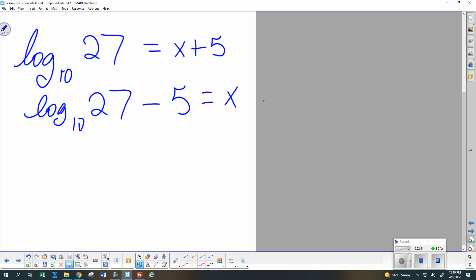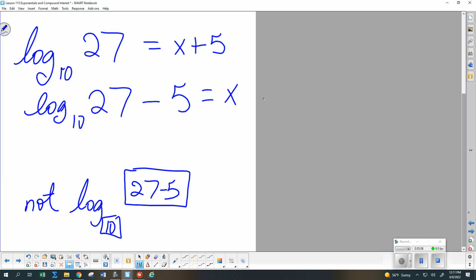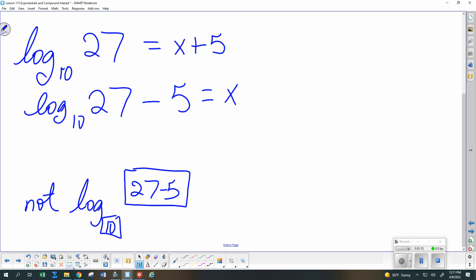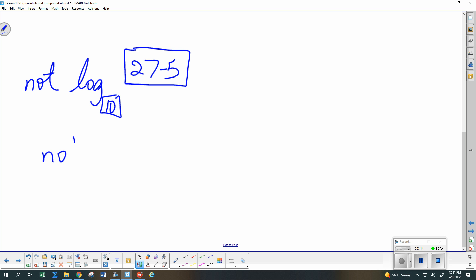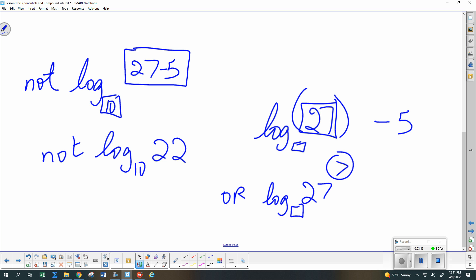But I had to be careful entering that on the calculator. It is not the log base 10 of, and then I've got this box, 27 minus 5. So what I need to do when entering that on the calculator is to do log, and I can enter the 10 or skip it, put the 27 in this box, and then use my arrow button to go out of that, and then do a minus 5, and then it will show up with parentheses around that 27. Or I can do log base 10 of 27, enter, and then it gives me a number, and then I can do minus 5, enter to get my answer.